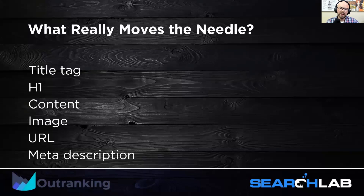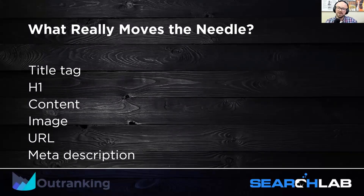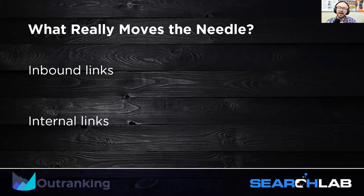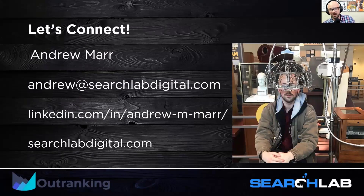So I've talked today about what you can do to optimize your content for visibility — title tag, H1, content, image, URL, and meta description. All should be optimized by including your keyword phrase, but fundamentally should be conversational and written for people to engage with. And beyond on-page optimization, you can improve visibility by getting links from other websites to your page, and by linking from other pages on your website to a particular page. These are really the most foundational, fundamental factors that will help you improve your content's visibility. You can reach me at andrew@searchlabdigital.com and find me on LinkedIn.